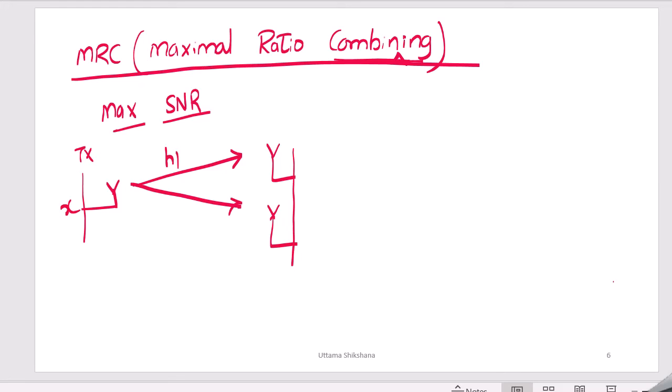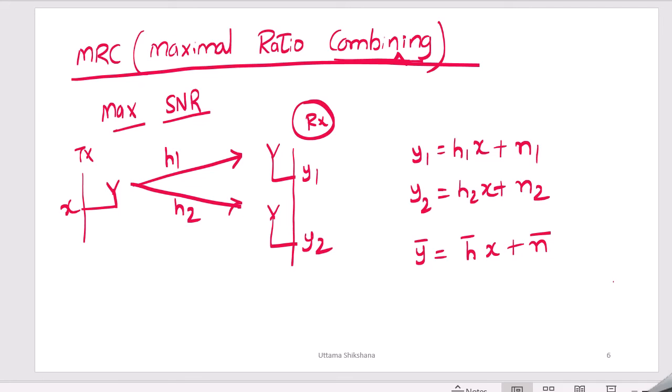This is the transmitter, we are transmitting x, h1 h2 and this is y1 y2 and this is the receiver. How can we write about y1? y1 is equal to h1 x, but since we will also have noise it will be plus n1. y2 is equal to h2 x plus n2. We can write this in the matrix form: y bar is equal to h bar x plus n bar.